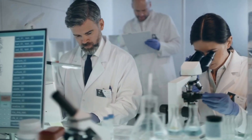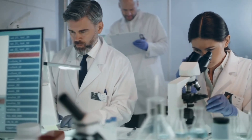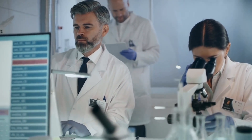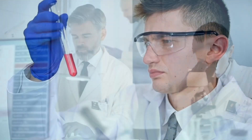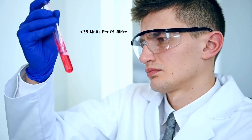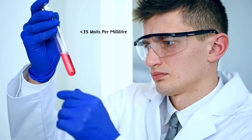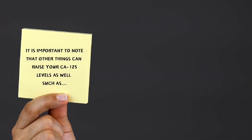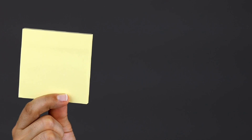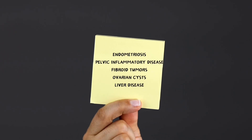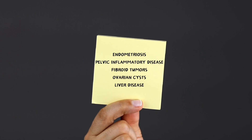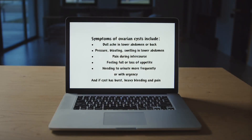To help either confirm or eliminate the possibility of a cyst being cancerous, your doctor may also order a CA-125 blood test. This measures the amount of protein Cancer Antigen 125 in your blood, which is found on most ovarian cancer cells and can secrete into the bloodstream. A normal CA-125 level is considered less than 35 units per milliliter. It is important to note that other conditions can also raise CA-125 levels, such as endometriosis, pelvic inflammatory disease, fibroid tumors, ovarian cysts, and liver disease.